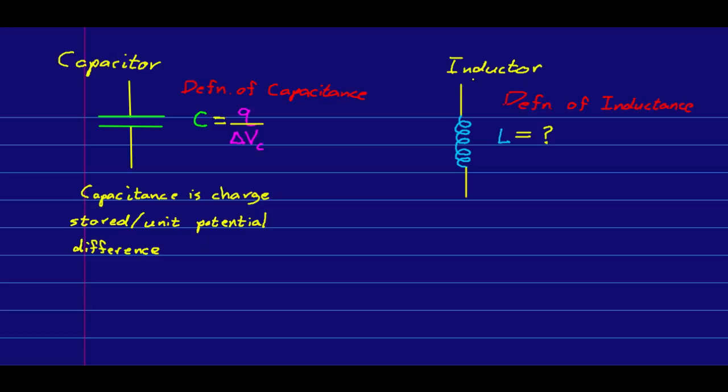Well, so every inductor must have a property, which we'll call inductance, which defines it. So, just like a resistor has a resistance, or a capacitor has a capacitance, every inductor has an inductance. Well, what is an inductance? What does it mean?